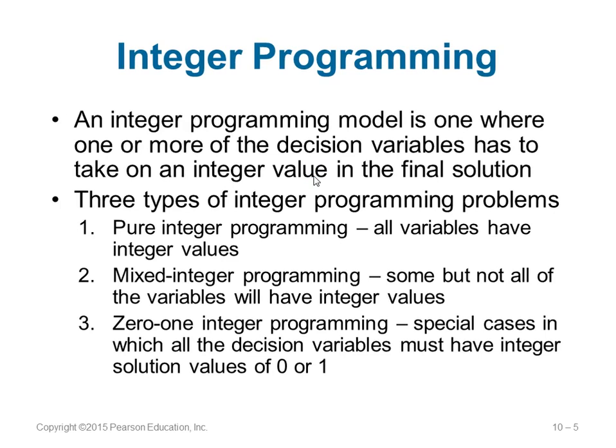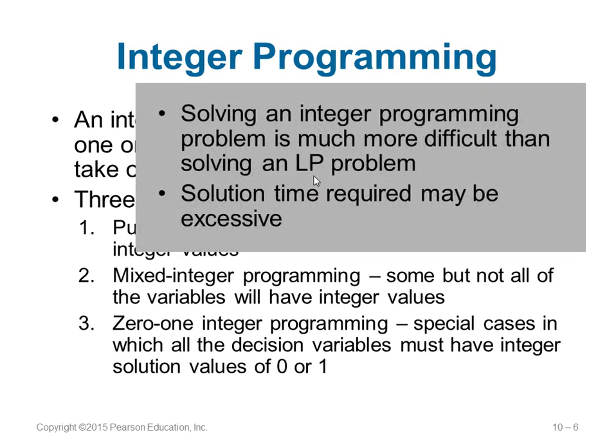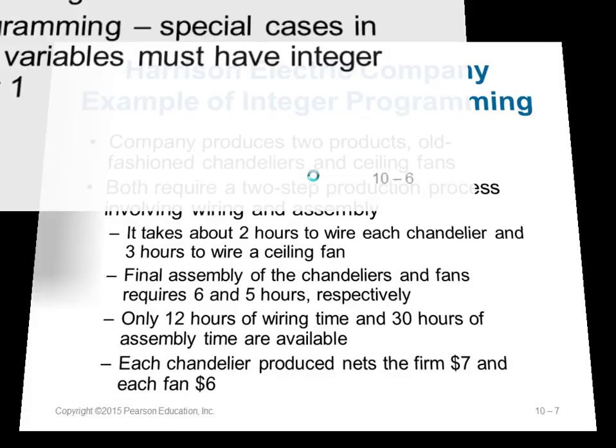In integer programming, you have one or more decision variables that must be integer in nature — integer values, not floating point. There are three types: first, pure integer programming, where all variables are integers. Second, mixed integer programming, where only some variables are integers. Third, 0-1 integer programming, a special type where all integer variables can hold only 0 or 1 — it is binary. Solving an integer programming problem is much more difficult and requires a lot more time compared to linear programming.